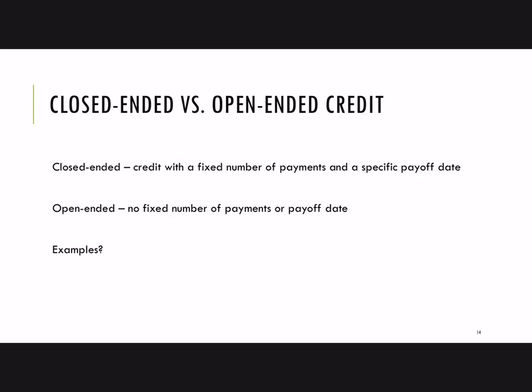We have two types of credit: closed-ended and open-ended. Closed-ended has a fixed number of payments and a specific payoff date. Open-ended has no fixed number of payments and no fixed payoff date. Can you think of any examples of these?